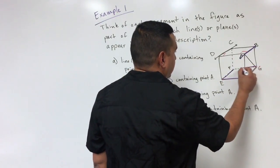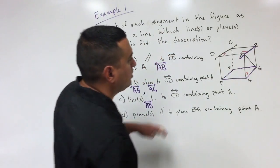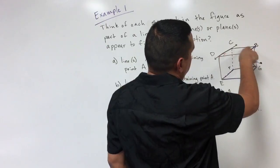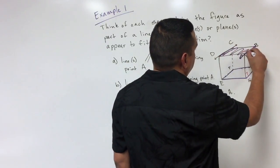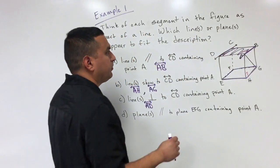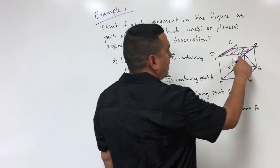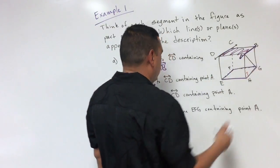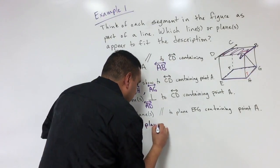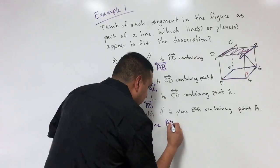For part d — planes parallel to plane EFG — plane EFG is the bottom plane, so the parallel plane is going to be the top plane. We can use any combination of three out of the four top points: A, D, C, or B. So we would say plane ABC, or any combination of those points would work.